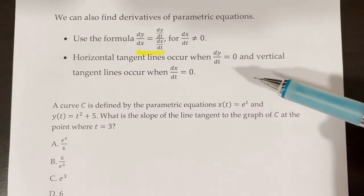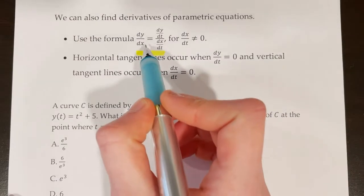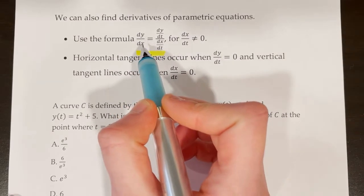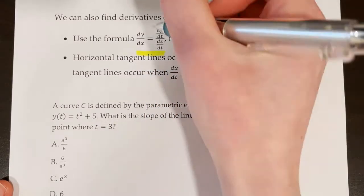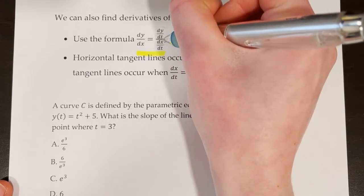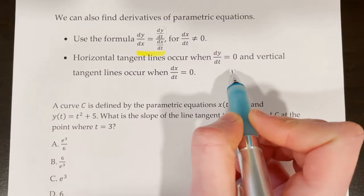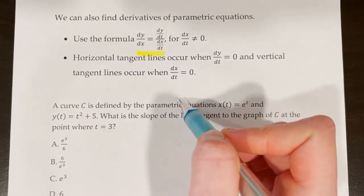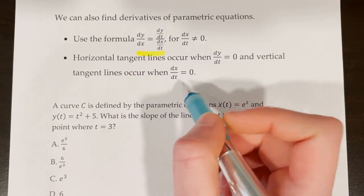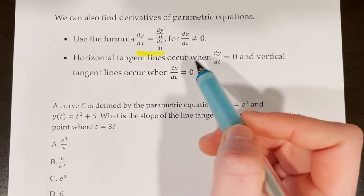Horizontal tangent lines occur when dy/dt = 0, and vertical tangent lines occur when dx/dt = 0. When the derivative dy/dx equals zero, the numerator dy/dt must equal zero — that gives the horizontal tangent. When dx/dt = 0, the denominator is zero, making the derivative undefined, which corresponds to a vertical tangent line.